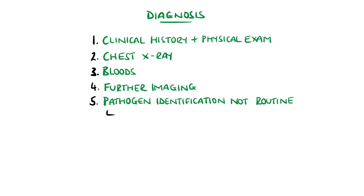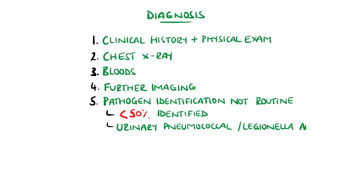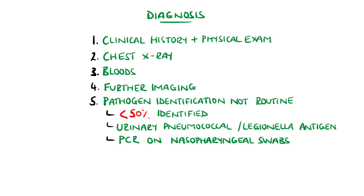Identification of the underlying pathogen is achieved in under half of cases, and due to empirical antibiotics usually being effective, there is generally no significant benefit in identifying the pathogen. Urinary testing for Legionella or pneumococcal antigens is readily available and is commonly done in those who have not improved on initial therapy or are severely unwell. PCR testing can also be an option on nasopharyngeal swabs or bronchoalveolar lavage.